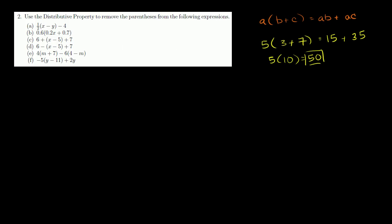Let's just apply that to a sampling of these problems. Let's do a. So we have 1 half times x minus y minus 4. Well, we multiply 1 half times both of these. So it's going to be 1 half x minus 1 half y minus 4. And we're done.